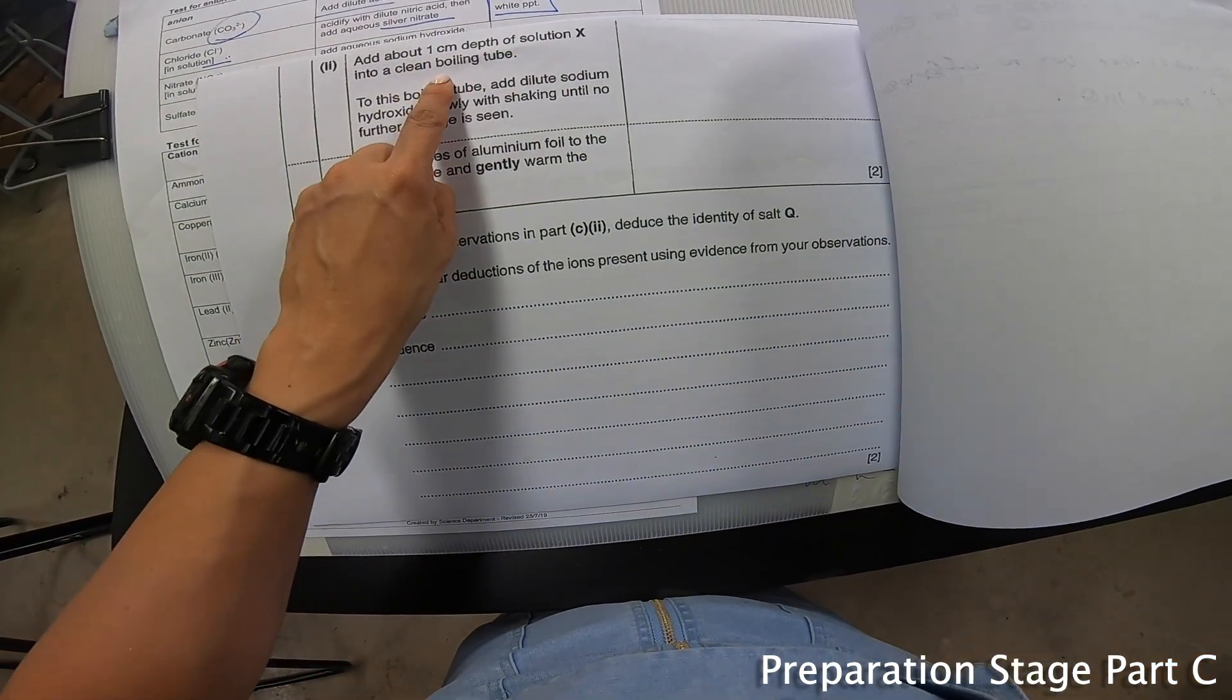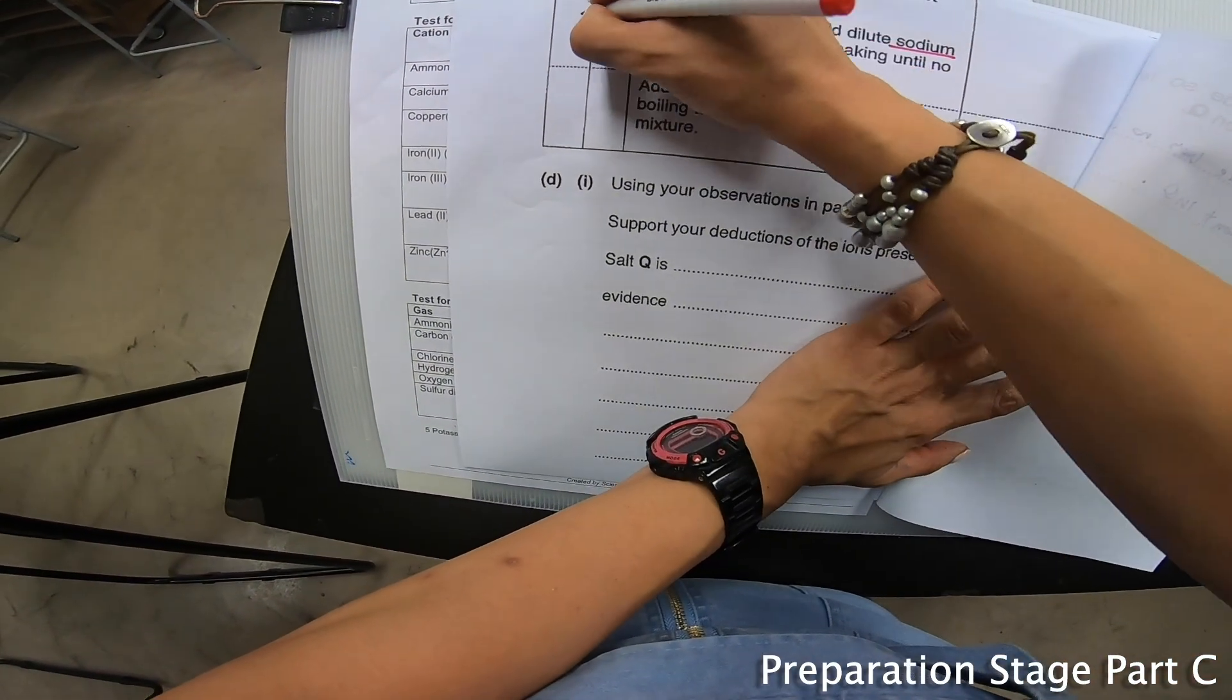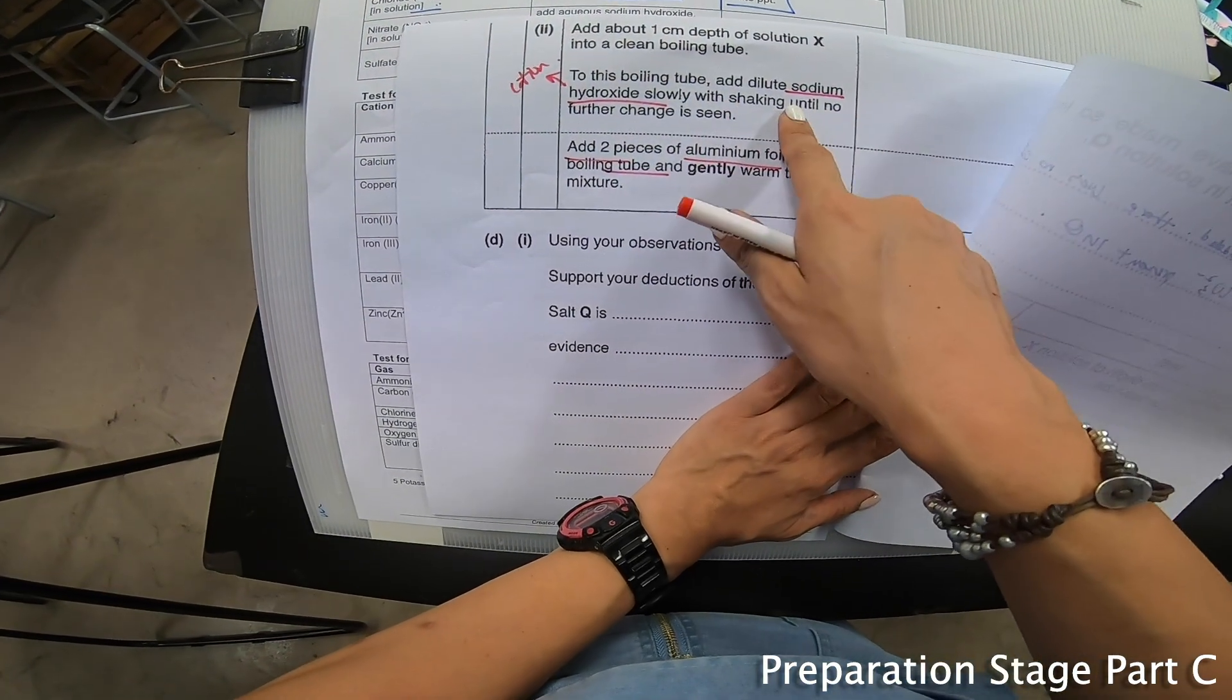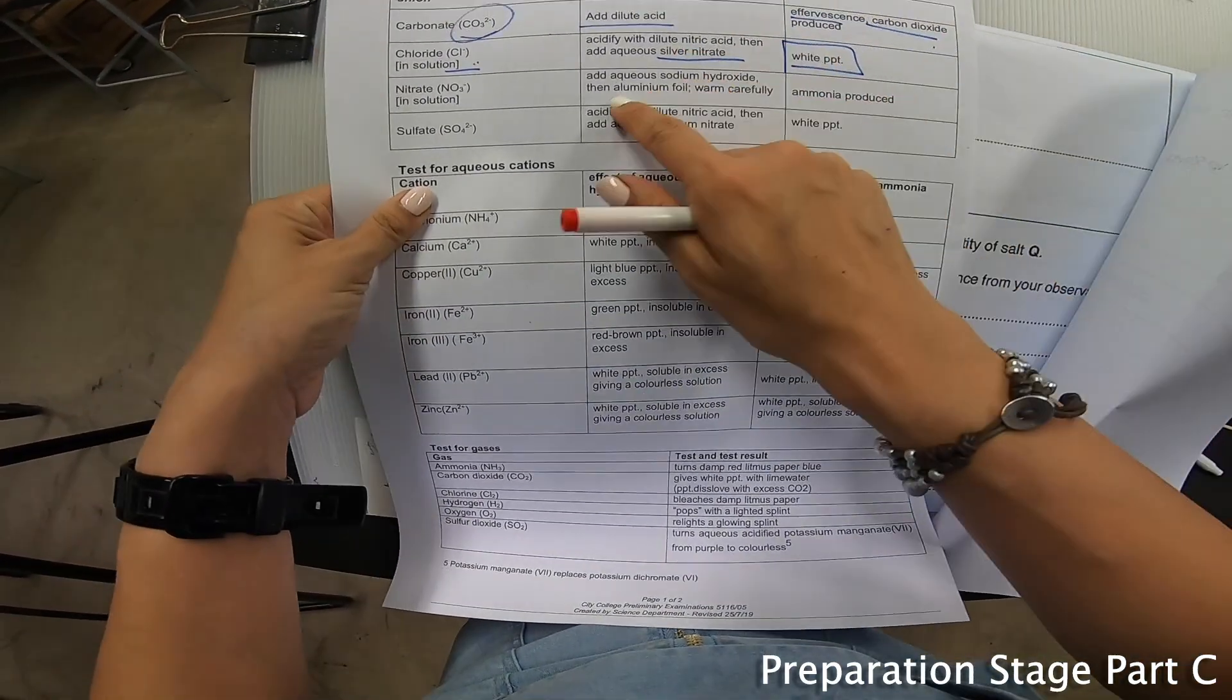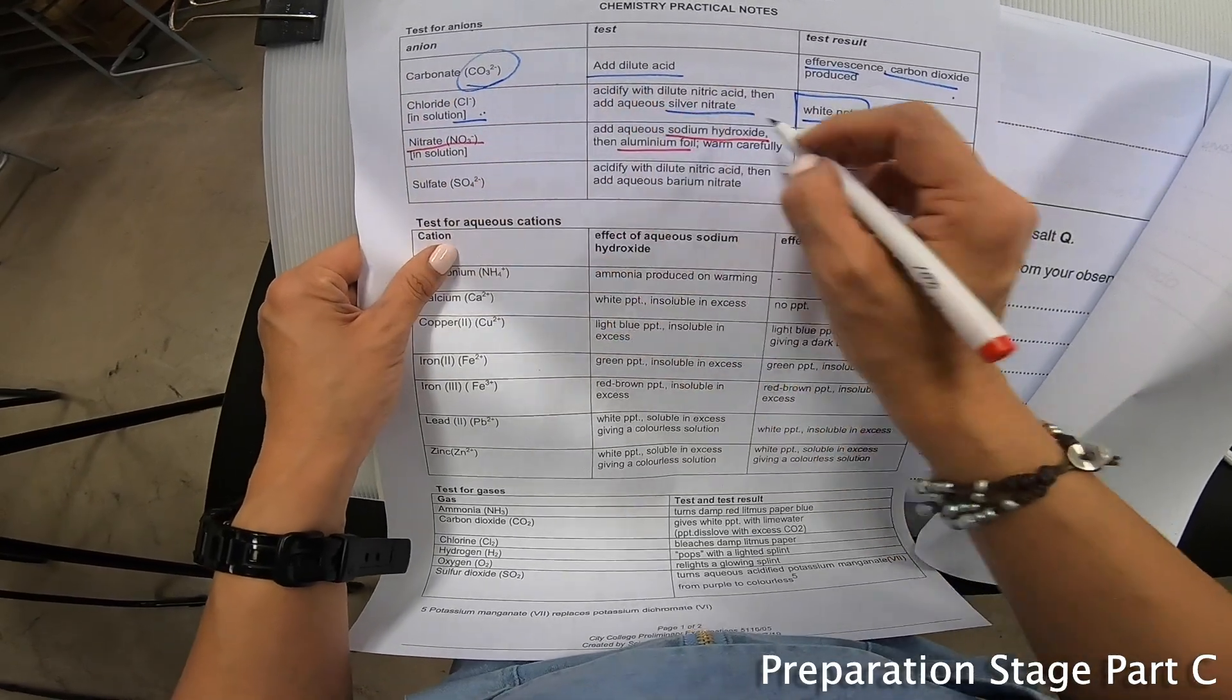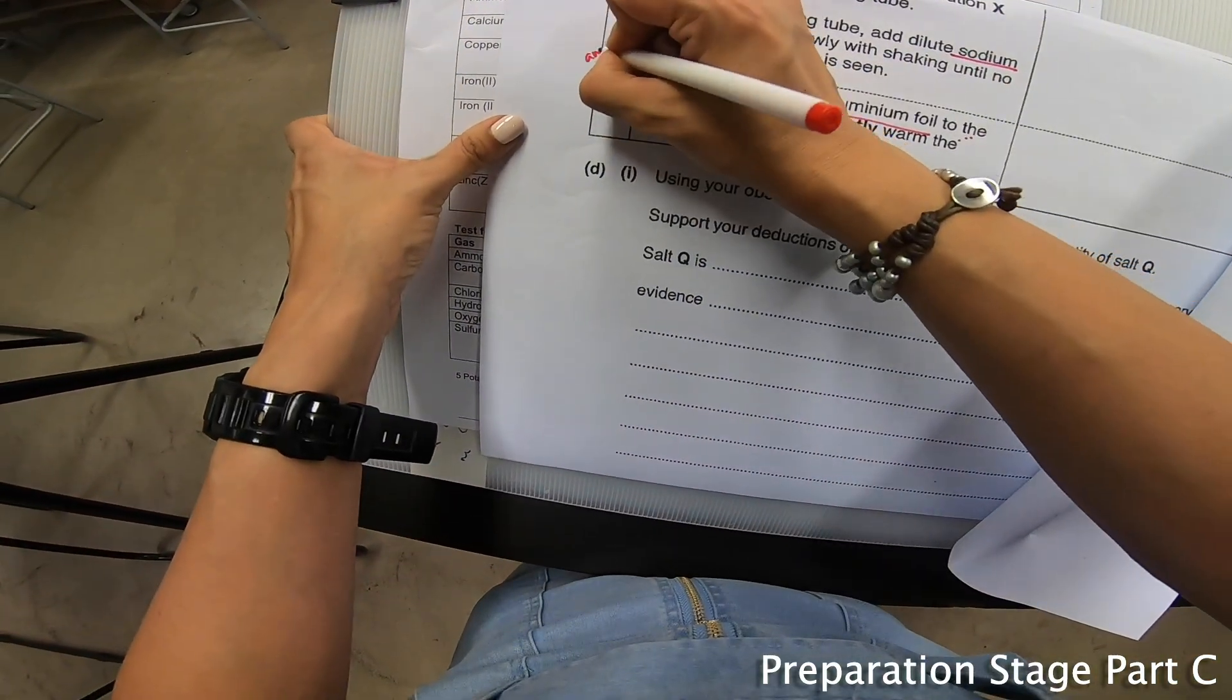Add about one cm depth of X into a clean boiling tube, and add sodium hydroxide slowly with shaking until no further change is seen. This portion is actually test for cation. Then add two pieces of aluminum foil to the boiling tube. This is very smart - first part test for cation, but with the aluminum foil your game changes. This shows you're testing for nitrate. Ammonia gas might be produced if nitrate is present.